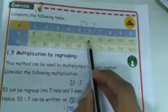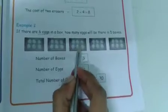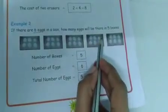Total number of eggs — what do we do? 5 multiplied by 6. Five sixes are 30. Very good. So five sixes are 30 eggs. Now count the eggs: 1, 2, 3... up to 30. Here also 30. Your answer is also 30, so your answer is correct. Understood?